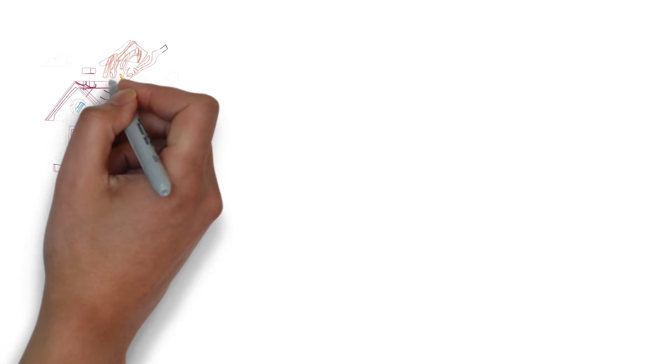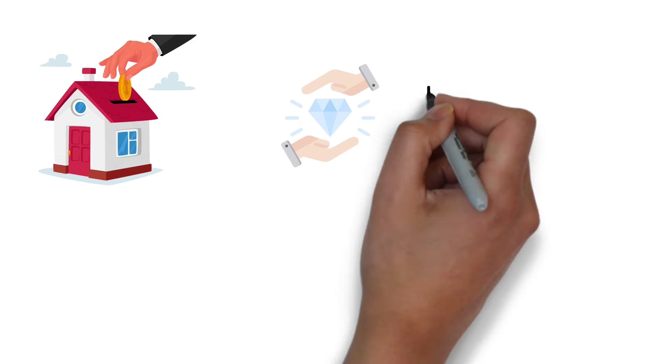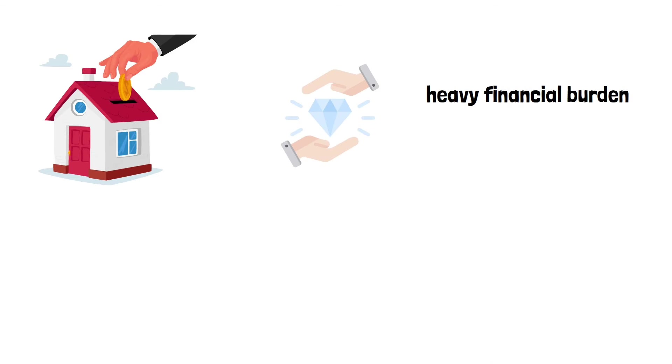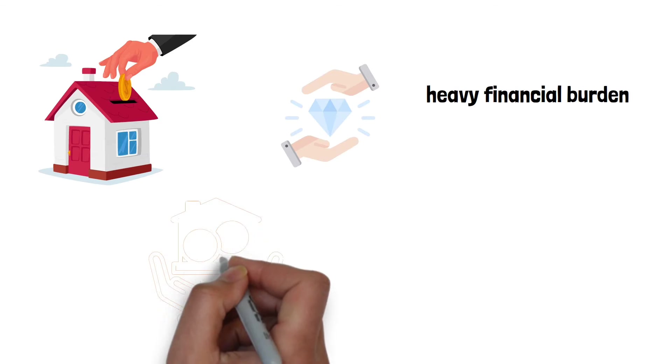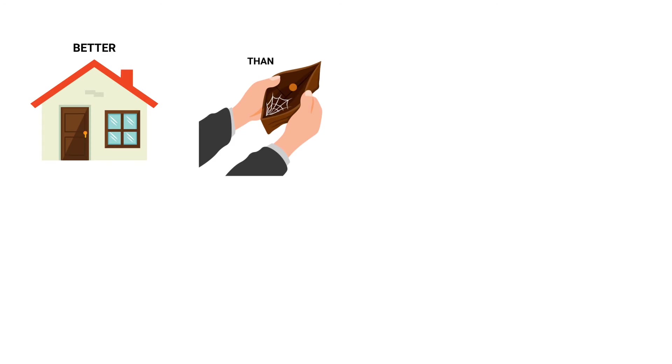The book also talks about being careful with mortgage debt. Although a home can be a valuable asset, taking on a large mortgage can be a heavy financial burden. The advice is to buy a house you can comfortably afford rather than stretching to your financial limits. It's better to have a smaller home with a manageable mortgage than to be house rich and cash poor.